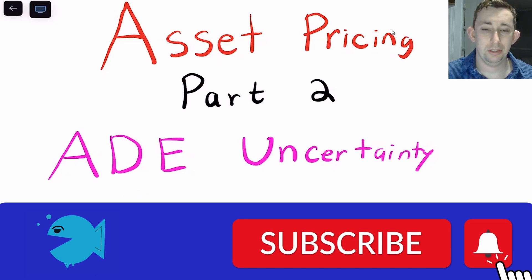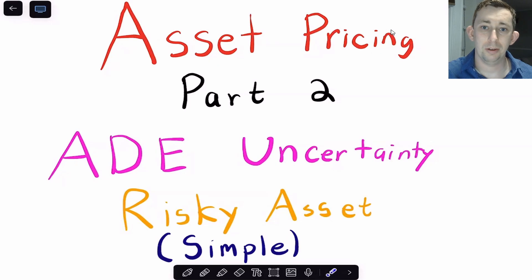Today we're going to start talking about risky assets. Specifically, we are going to talk about asset pricing in the Arrow-Debreu Equilibrium model. And we're going to add uncertainty or different states of the world into the Arrow-Debreu model. So we talked about how to solve for an allocation for an Arrow-Debreu Equilibrium with uncertainty in a separate video, but in that video we really didn't talk about asset pricing that much. So as normal, timestamps are below if you would like to jump around, but let's start getting into it.